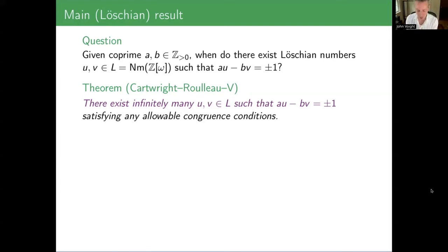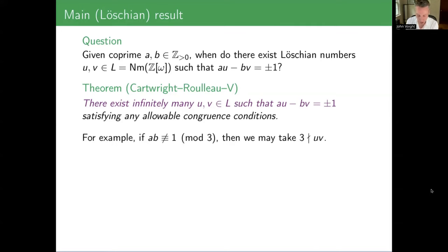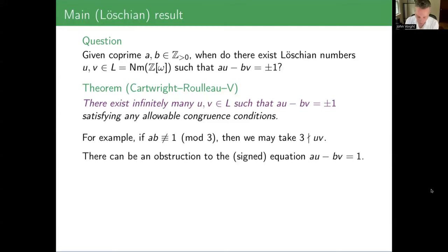The Loeschian numbers are automatically positive — they're lengths, like we saw on the hexagon board. Here's an example of one of these allowable conditions: if A and B are not 1 mod 3, then you can assume that 3 does not divide the product of U and V.